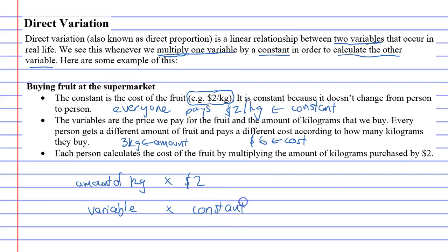And when you multiply this, you're going to get the cost of the fruit. You're going to get the other variable. And that's what it's saying here. Multiply one variable by a constant in order to calculate the other variable. And whenever you do this in real life, it is called direct variation.